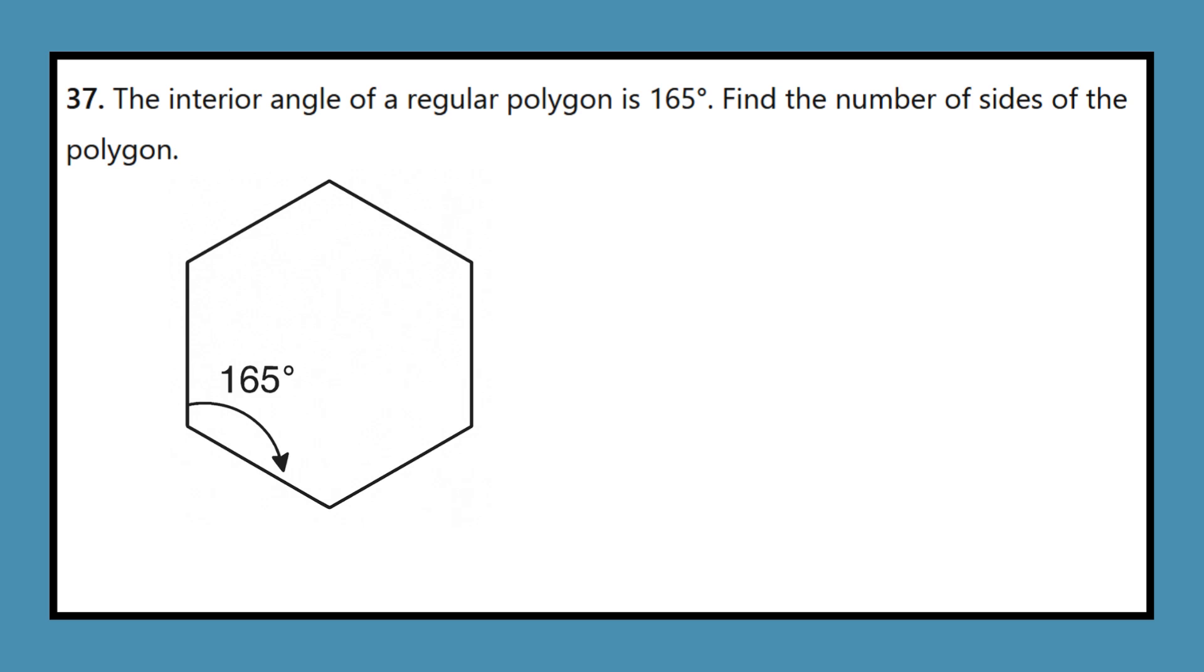Question 37: The interior angle of a regular polygon is 165 degrees. Find the number of sides of the polygon.